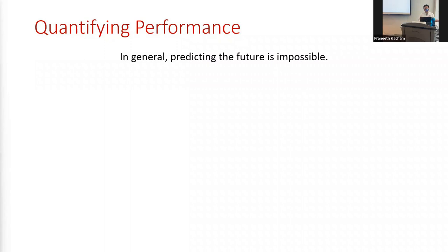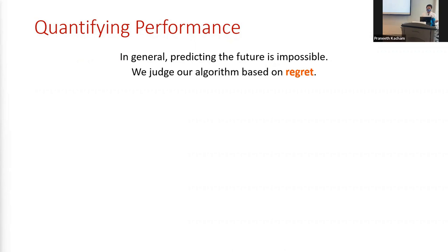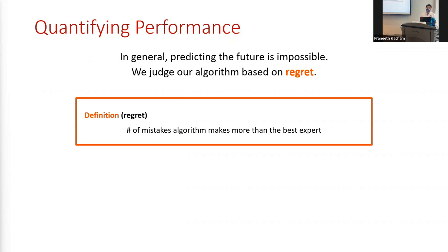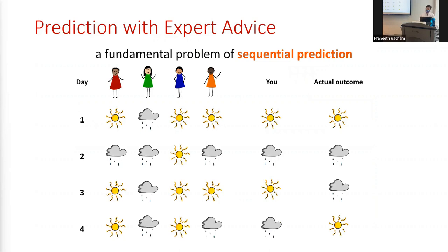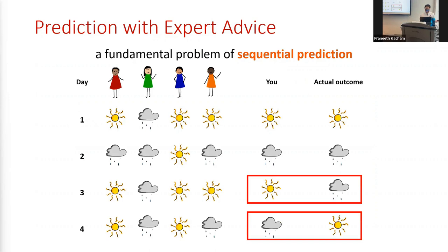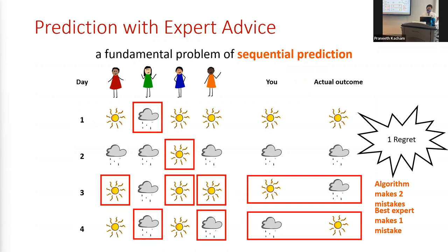How do we quantify performance? In general, predicting the future is impossible — we're not going to assume any underlying distribution on the outcomes. So we're not going to say you can ignore the experts and try to find a pattern in outcomes to predict the future yourself. Instead, we judge our algorithm based on what's known as regret: the number of mistakes the algorithm makes more than the best expert. Average regret is just regret divided by the total number of days. In our previous example, our algorithm made two mistakes and the best expert made one, giving us one regret and an average regret of one-fourth.